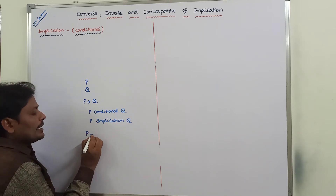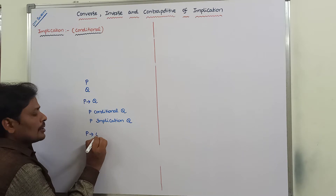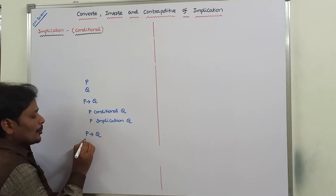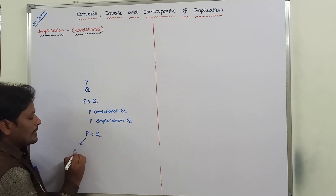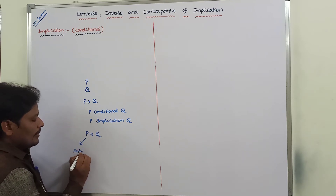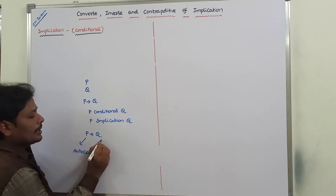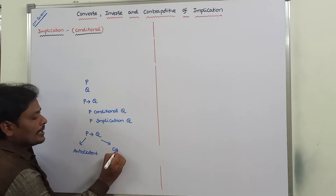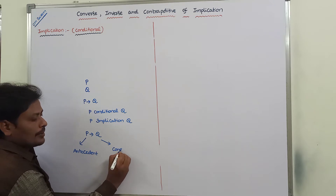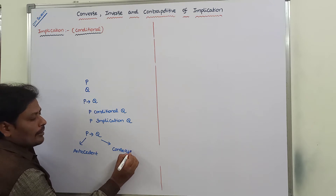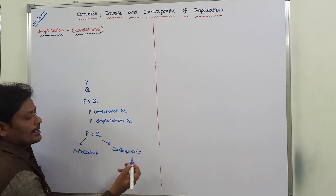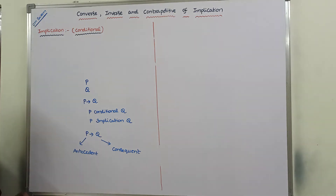In P conditional Q, P is called the antecedent and Q is called the consequent.